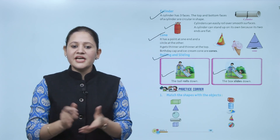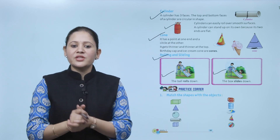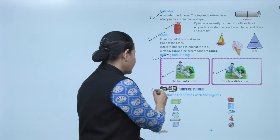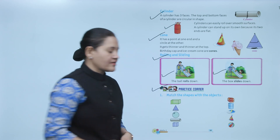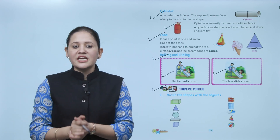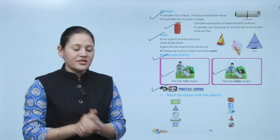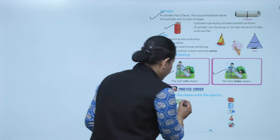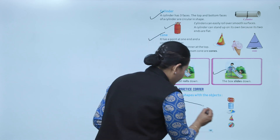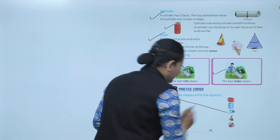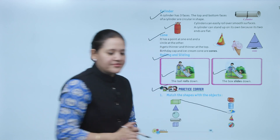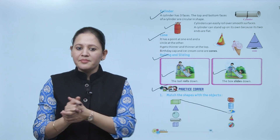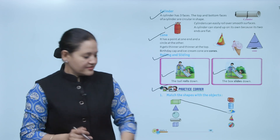Next is practice corner: match the shape with the object. First one is cuboid — an eraser is of cuboid shape, so match it with cuboid.